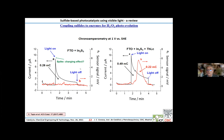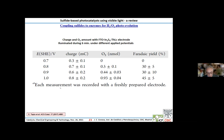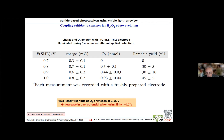A table indicates at different potentials the charge transfer, the amount of oxygen generated, and the corresponding Faraday yields. The Faraday yield at one volt coincides with the expected value. The interesting thing is that in the absence of light, the first hints of oxygen only appear at 1.55 volts. This means that with light there is a decrease in overpotential of more than 0.7 volts, which is certainly an interesting result.